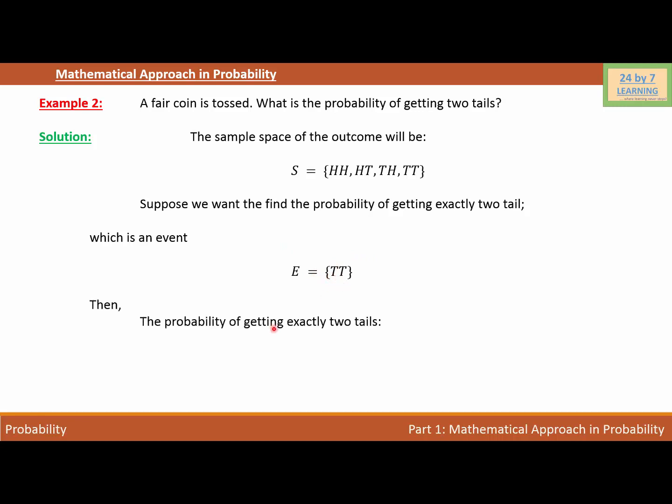The probability of getting exactly two tails is P(E) equals one over four. Because out of these four cases, I have only one case where both tosses are tail. So P equals one over four.